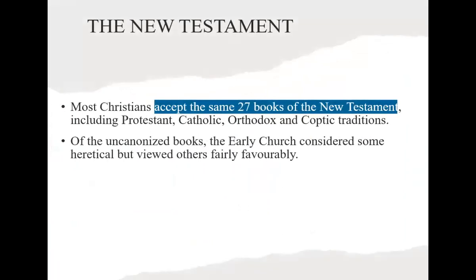We've got about three minutes to cover the New Testament Apocrypha — this is a lot easier, because fortunately Protestants, Catholics, Orthodox, and the Coptic all agree on the 27 books of the New Testament. We do have apocryphal books attributed to the New Testament period, but all Christians agree they don't belong in the Bible. With the Old Testament, they all agree on the 39 books but Catholics and Orthodox add extra ones — when it comes to the New Testament, there's agreement.